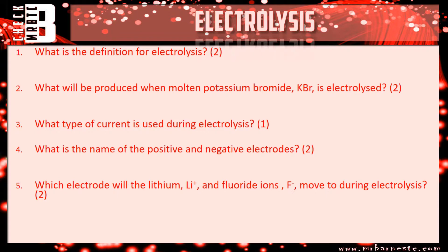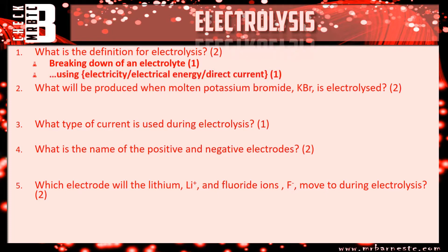Hopefully you've had a go at that — let's have a look at the answers. Question one: the breaking down of an electrolyte using electricity. First mark: breaking down of an electrolyte. Second mark: electricity — I would also accept electrical energy or direct current. Question two: molten potassium bromide can only produce potassium and bromine. Remember they turn back into their elements — bromine goes around in pairs so it would be Br₂. Just go with the names potassium and bromine for one mark each.